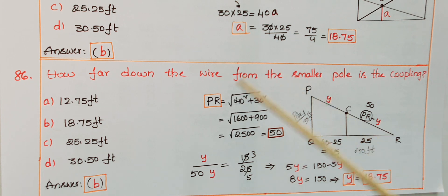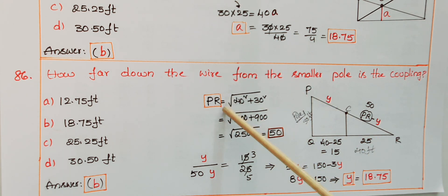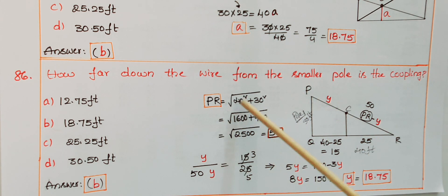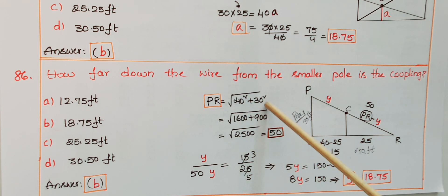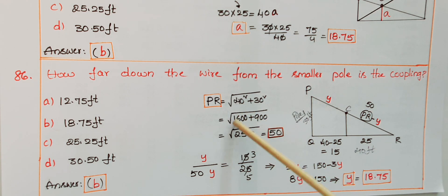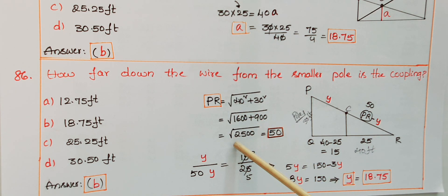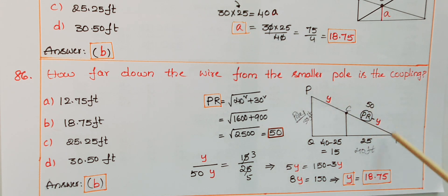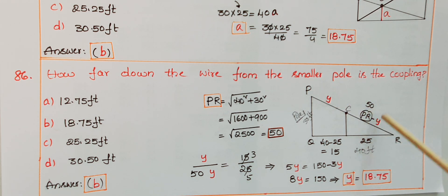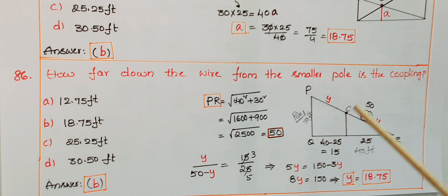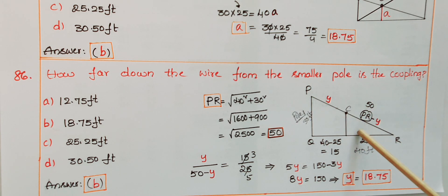Since the angle at Q is 90 degrees, by the Pythagorean theorem: PR² = QR² + PQ² = 40² + 30² = 1600 + 900 = 2500, so PR = √2500 = 50 feet. Therefore CR = PR − y = 50 − y.